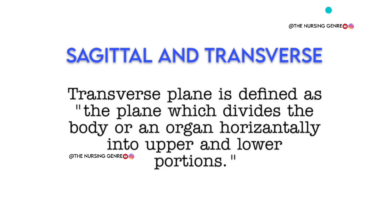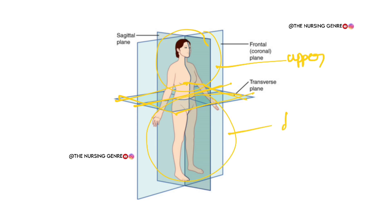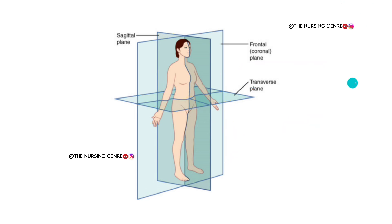Next one is transverse plane. Transverse plane is defined as the plane which divides the body or an organ horizontally into upper and lower portions. This is the transverse plane — this is the upper portion and this is the lower portion. This transverse plane divides the body into upper and lower parts, so we call it transverse plane.